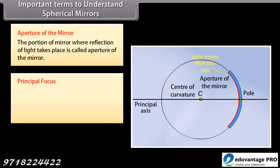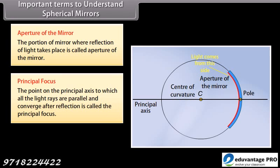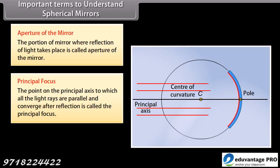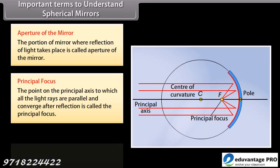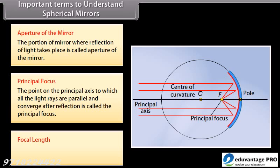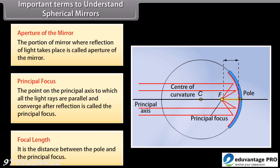Principal focus: the point on the principal axis to which all the light rays parallel to it converge after reflection is called the principal focus. Focal length: it is the distance between the pole and the principal focus.